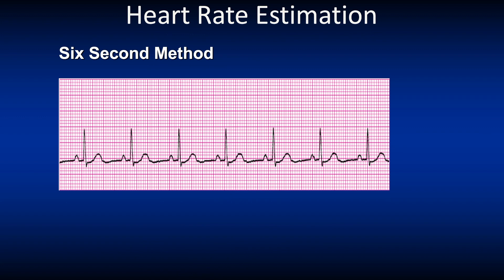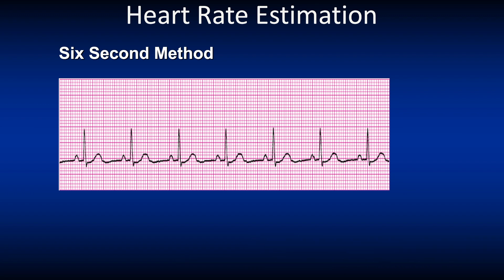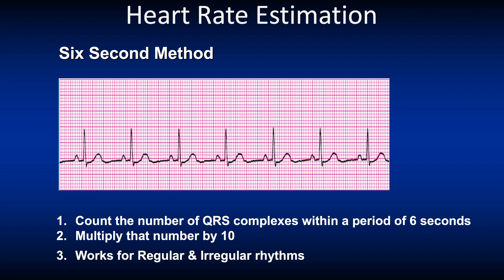A commonly used technique is the 6-second strip method. You need to have a strip with 30 big boxes. You count the number of QRS complexes within the 6-second strip, multiply that number by 10, and that gives you the average rate. The 6-second strip method can be used for both regular and irregular rhythms. Counting the QRS complexes: 1, 2, 3, 4, 5, 6, 7 — meaning 7 times 10, so the average rate is approximately 70.